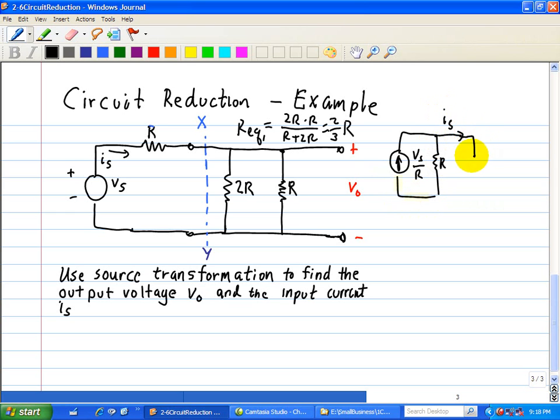Now we can replace this equivalent resistance with two-thirds R. So here's our IS shown here.